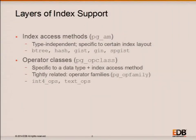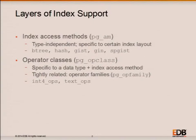One of the hallmarks of PostgreSQL in general is its extensibility, and this is particularly strong in the context of its indexing capabilities. There are two relevant layers: the index access method layer and the operator class layer. Currently there are five index access methods: btree, hash, gist, gin, and spgist.